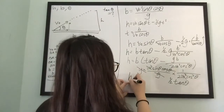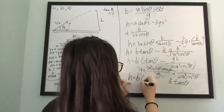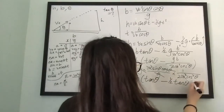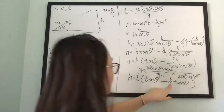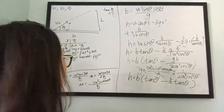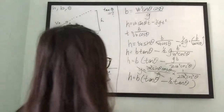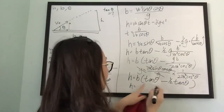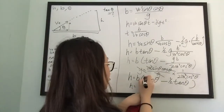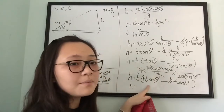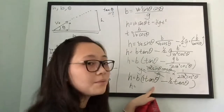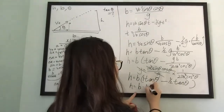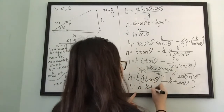So that gives h equals b·tan(θ) minus one-half b·tan(θ). There's a 1 in front from the first term, so one minus one-half gives one-half — meaning h equals b times one-half tan(θ).